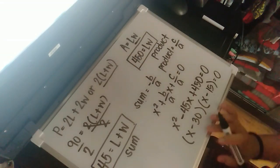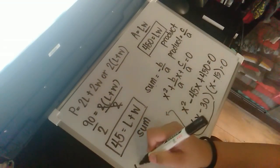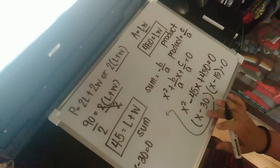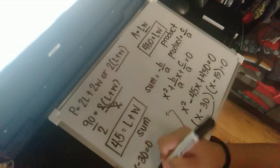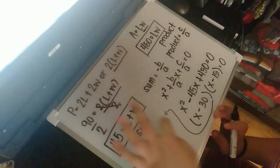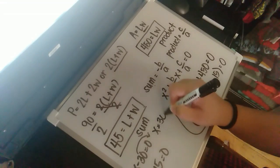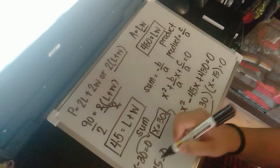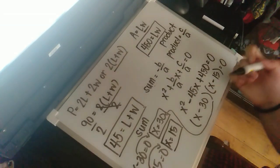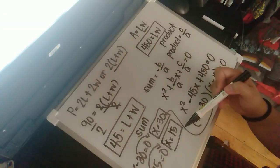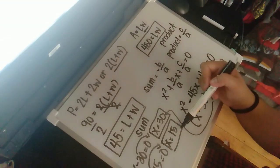To get the values of x, we solve the equation. Transposing negative 30 to the other side gives positive 30, and transposing negative 15 gives the other root. We obtain the values 30 and 15. The larger value is the length and the smaller value is the width.